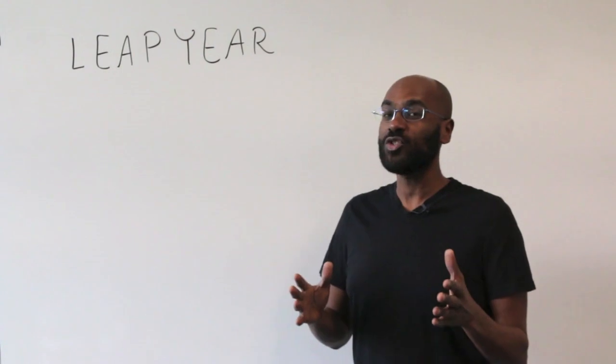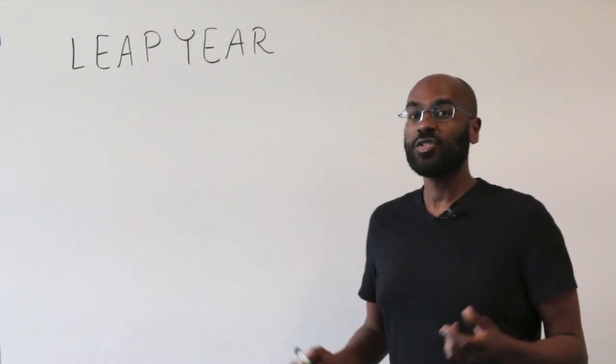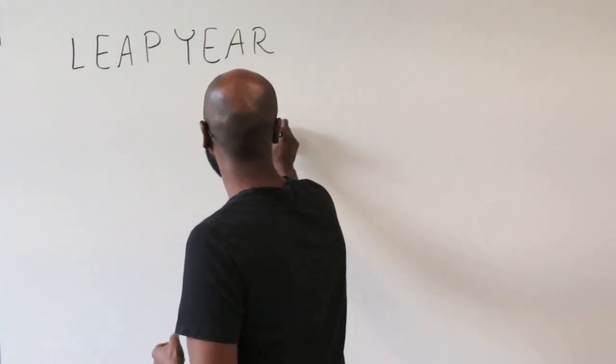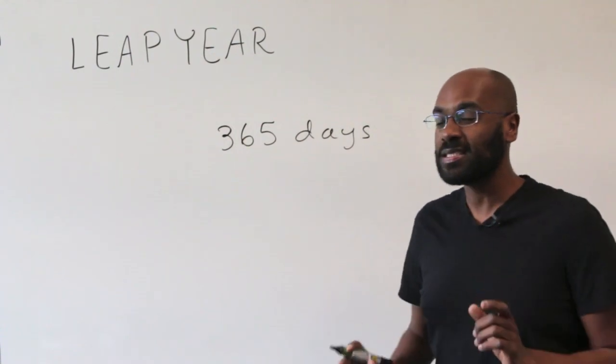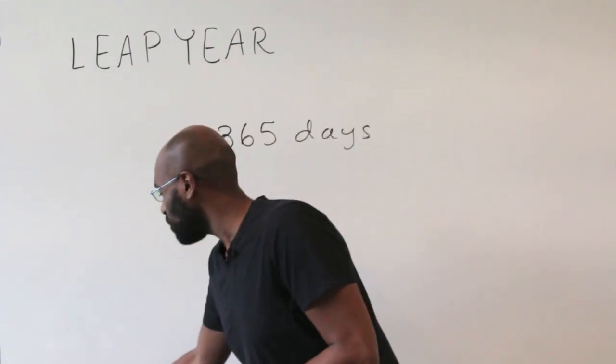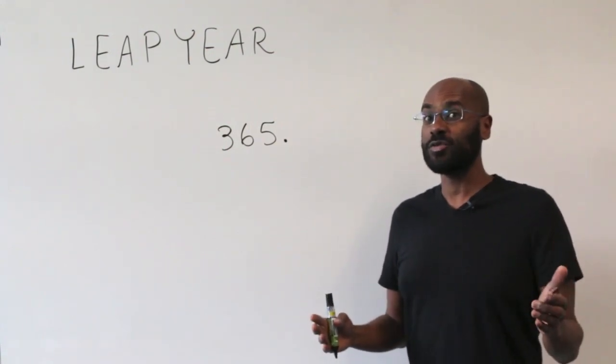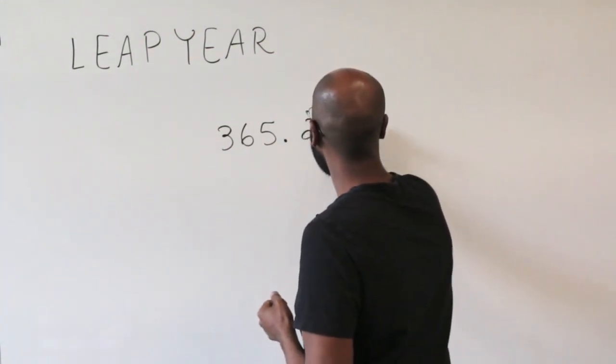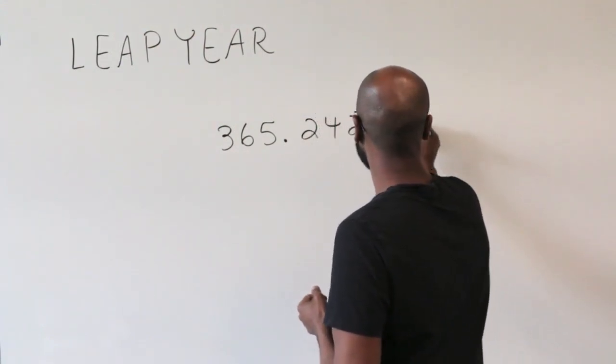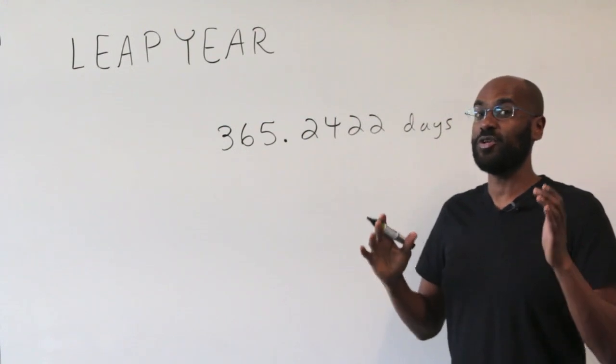And the reason has to do with how often the earth spins around the sun. So the common belief is that the earth spins around the sun every 365 days. But actually that's not the case, it's a little bit more than this. It turns out that the earth spins around the sun every 365.2422 days roughly. And this is going to explain why we have leap years in the first place.